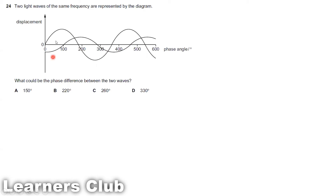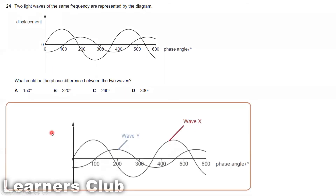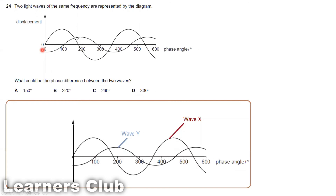Taking this wave as wave Y and the other as wave X: when wave X is starting at zero degrees, wave Y is starting at 100 degrees. So one phase difference between them is 100 degrees, which is not among the answer options.